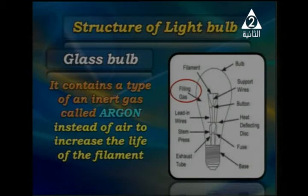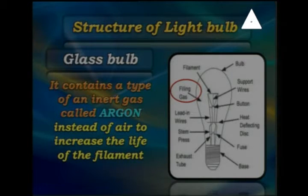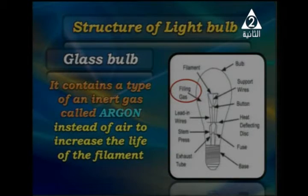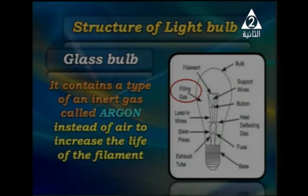Argon gas does not react under normal conditions — just like helium gas. The argon gas is used instead of air to increase the life of the filament, allowing the lamp to produce light for a long time without being damaged.